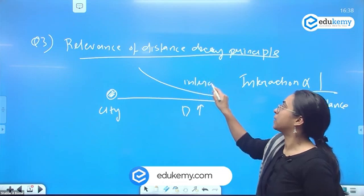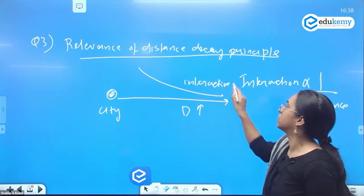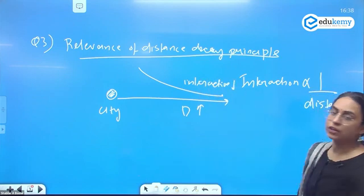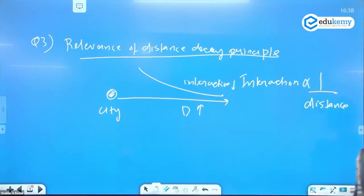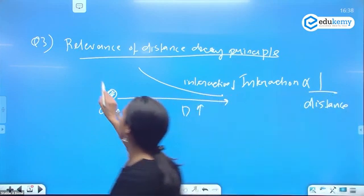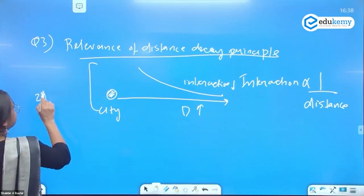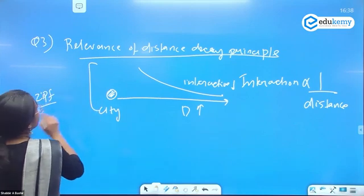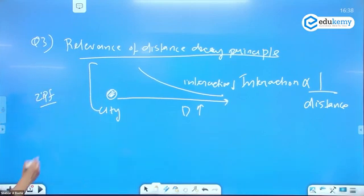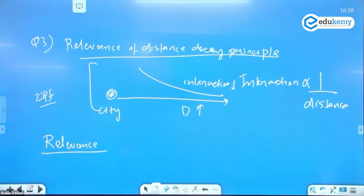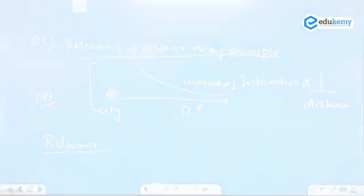There will be a reduction of interaction as we move away from the city. This is the distance decay principle given by Zipf. Now I have to look into the relevance of it — what is the relevance of it?